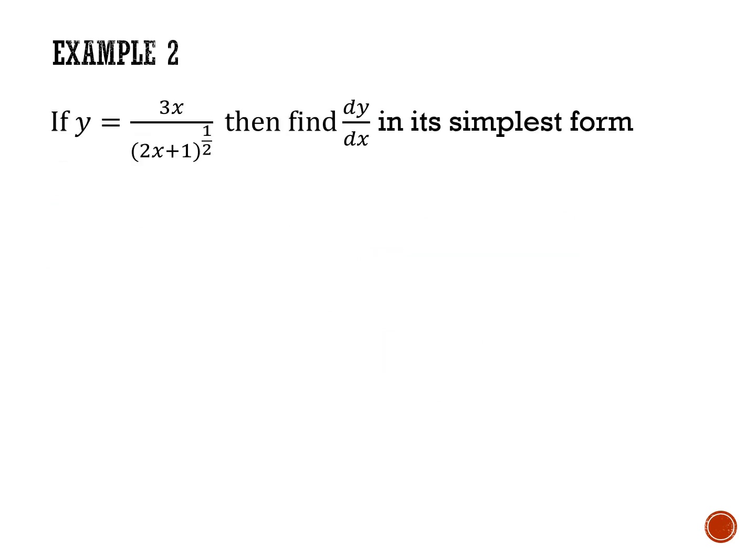The next example is a little more complicated. The question says 'find dy/dx in its simplest form,' so once we've applied the quotient rule and get a messy result, we must tidy it. Sometimes the examiner says 'show that'; if it says 'simplest form' they expect you to combine and simplify. If you're just finding the gradient at a point, you can plug values in without full simplification.